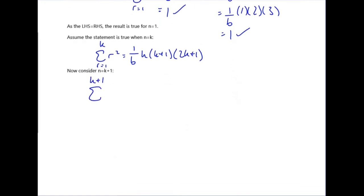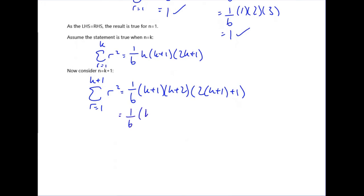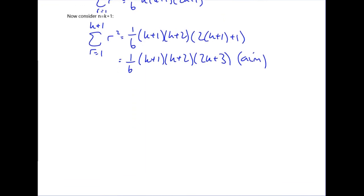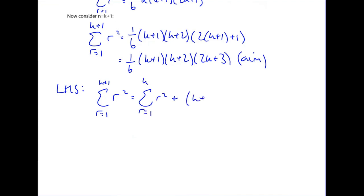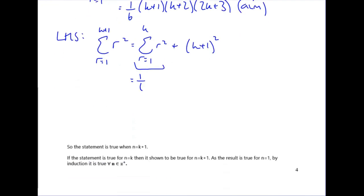Now do the same thing but with k plus 1. Subbing that in gives (k+1)(k+2)(2k+3) over 6, and this is what we are aiming to end up with. Starting on the left hand side: the sum from r equals 1 up to k plus 1 of r squared. Using the trick for series, write this as the sum up to k plus the final term, which you get from substituting k plus 1 into r squared. We can then use the assumption step to replace the sum to k with what we assumed to be true.